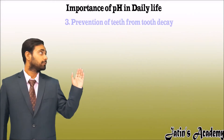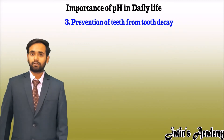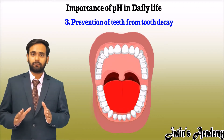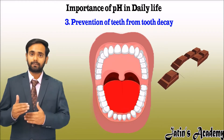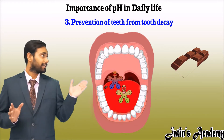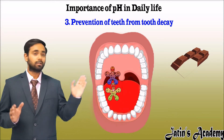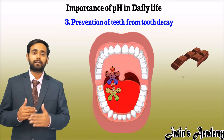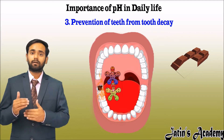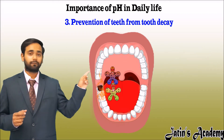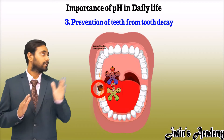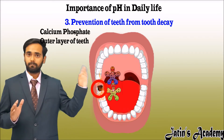Our third point is prevention of teeth from tooth decay. When we eat sugary things like chocolates or toffees, the bacteria present in our mouth convert the sugar particles into acid. This acid corrodes the outer surface of our teeth, which is calcium phosphate, and the white calcium phosphate becomes black in color.